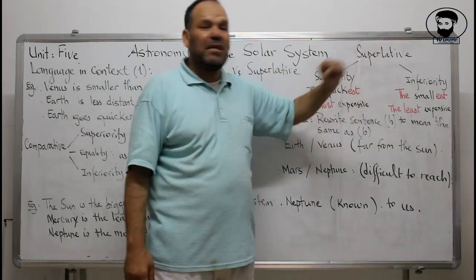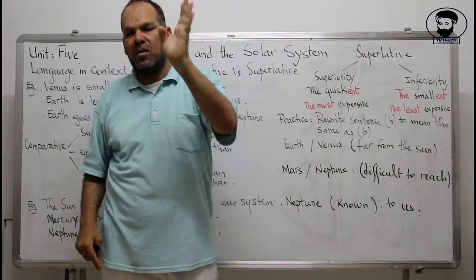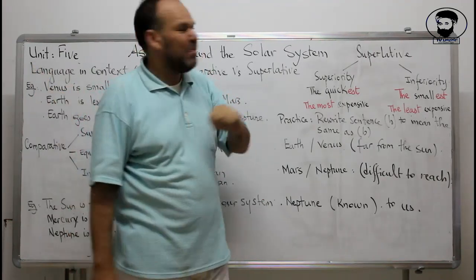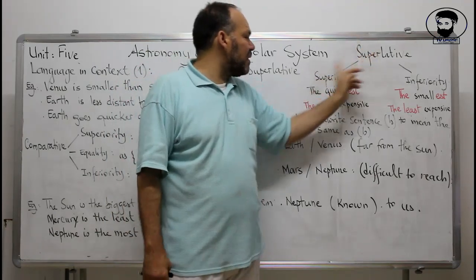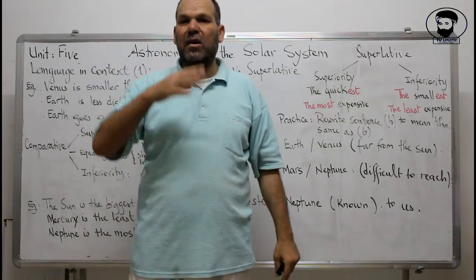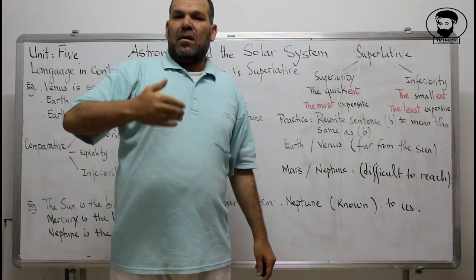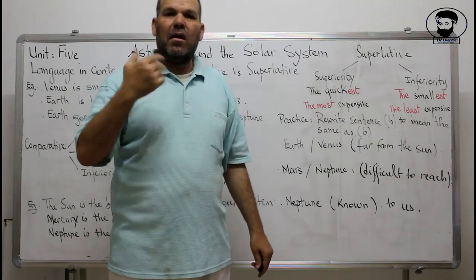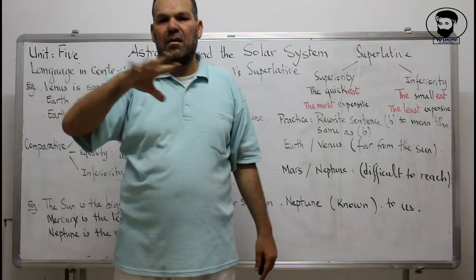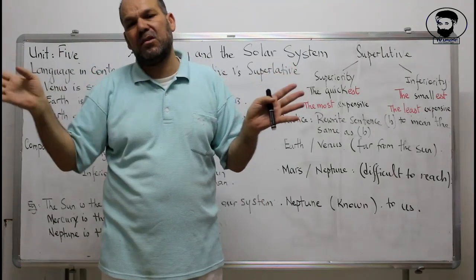The superlative is comparing one thing with others — two, three, four, or more. Whenever there are more than two things we do not use the comparative; we use the superlative. In the superlative you have either superiority or inferiority — there is no equality, because you cannot make one thing equal to many things.